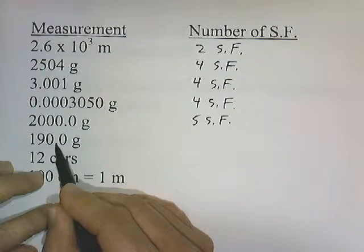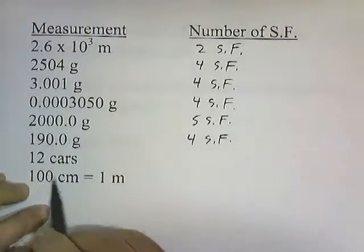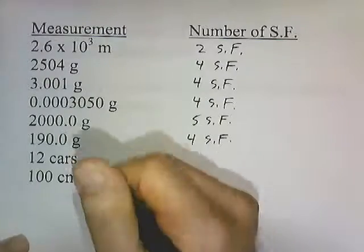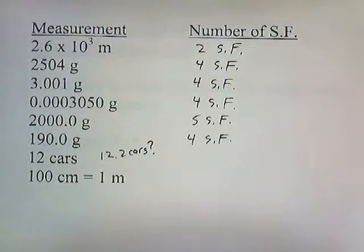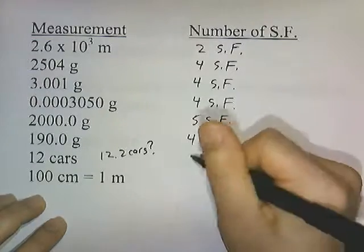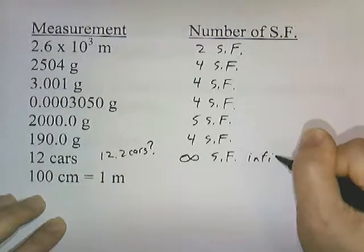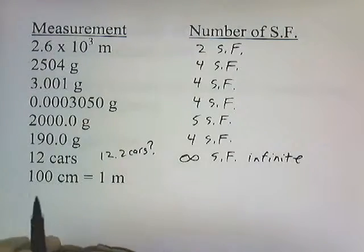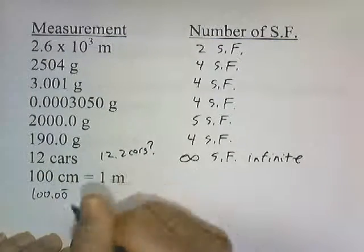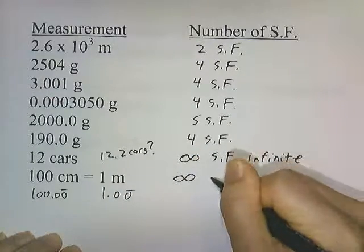190.0 — the zero is behind the decimal and behind a number, so it counts: 4 significant figures. 12 cars — does it make sense to say 12.2 cars? No. Cars are a counting unit; these are counting numbers, so this is an infinite number of significant figures. 100 centimeters is defined as equal to 1 meter — this is going to be 100.00 to infinity equal to 1.00 to infinity. This is also an infinite number of significant figures.